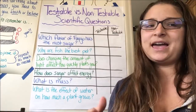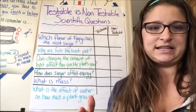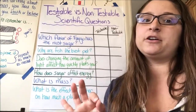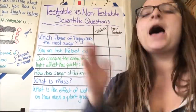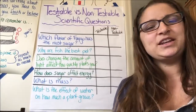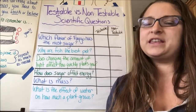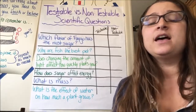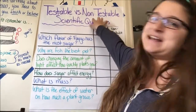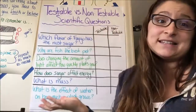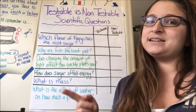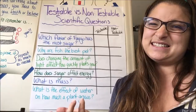Non-testable questions you can't answer by conducting an experiment. For example, if you were to say, why is purple the best color in the world? Can you test that? Not really. That's based in an opinion. Oftentimes if something's based in an opinion, it's going to fall under that non-testable category because you can't test it. You can't prove it. Testable, you can prove. Non-testable, not so much.